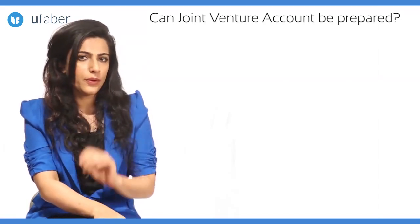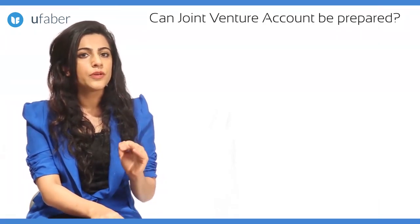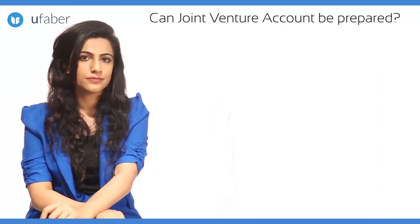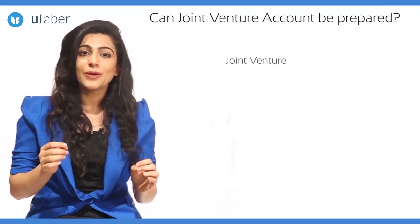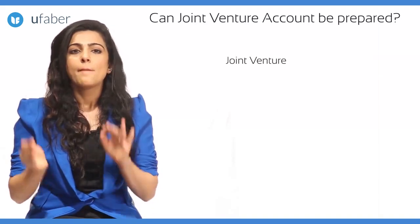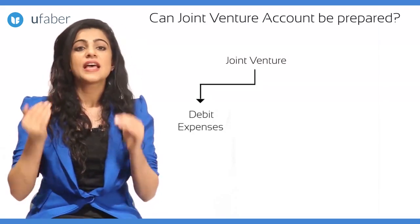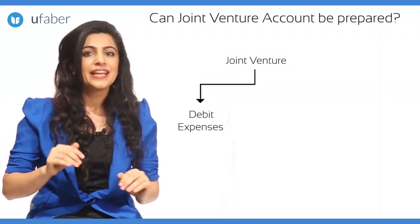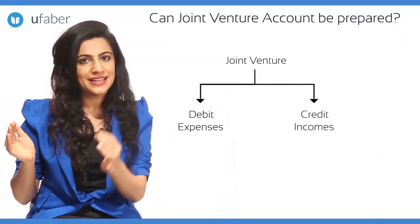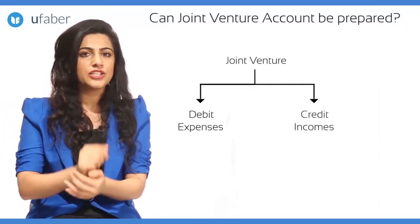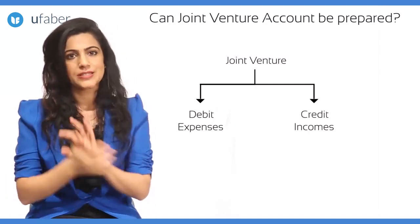Consider the case of the joint venture account. How and why do we prepare the joint venture account? In short, the joint venture account is prepared by debiting all joint venture expenses and losses and crediting all joint venture incomes and gains. We prepare the joint venture account to ascertain the joint venture profit or loss.